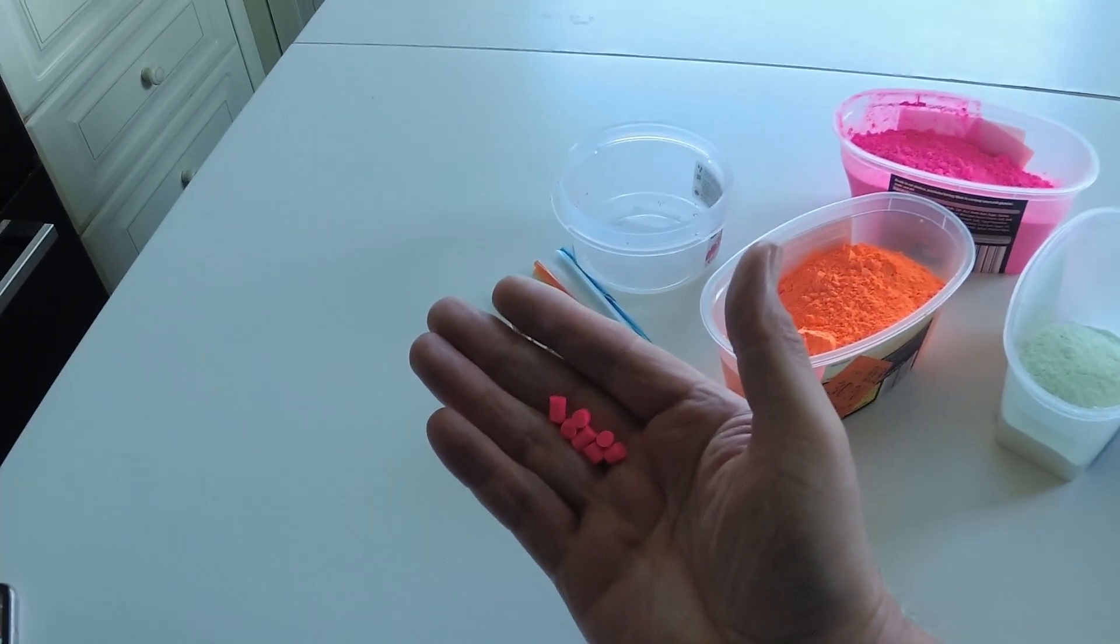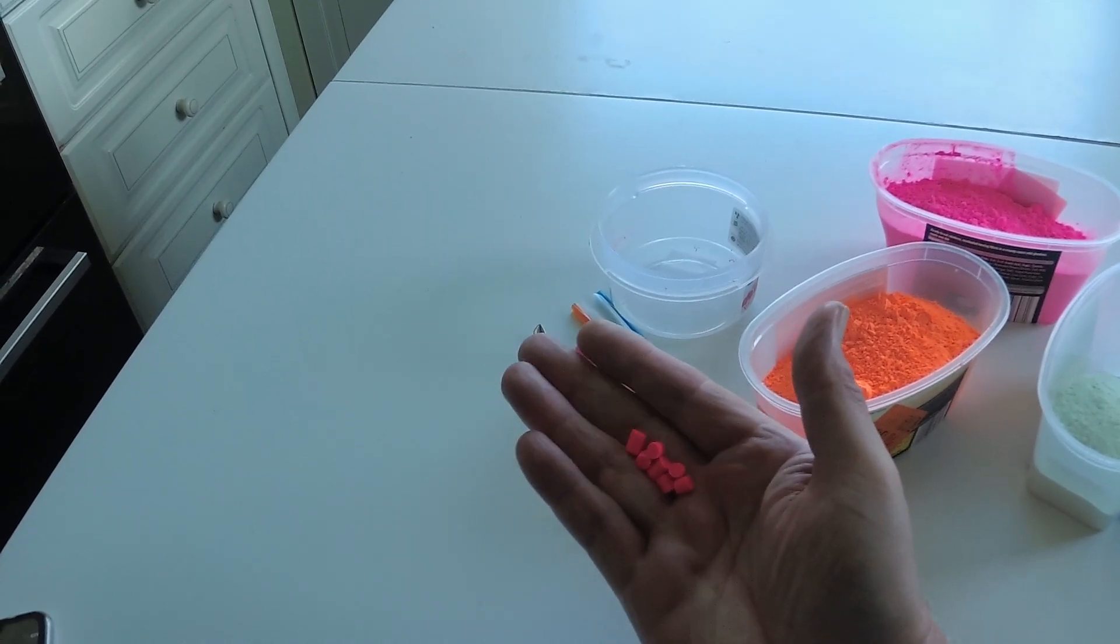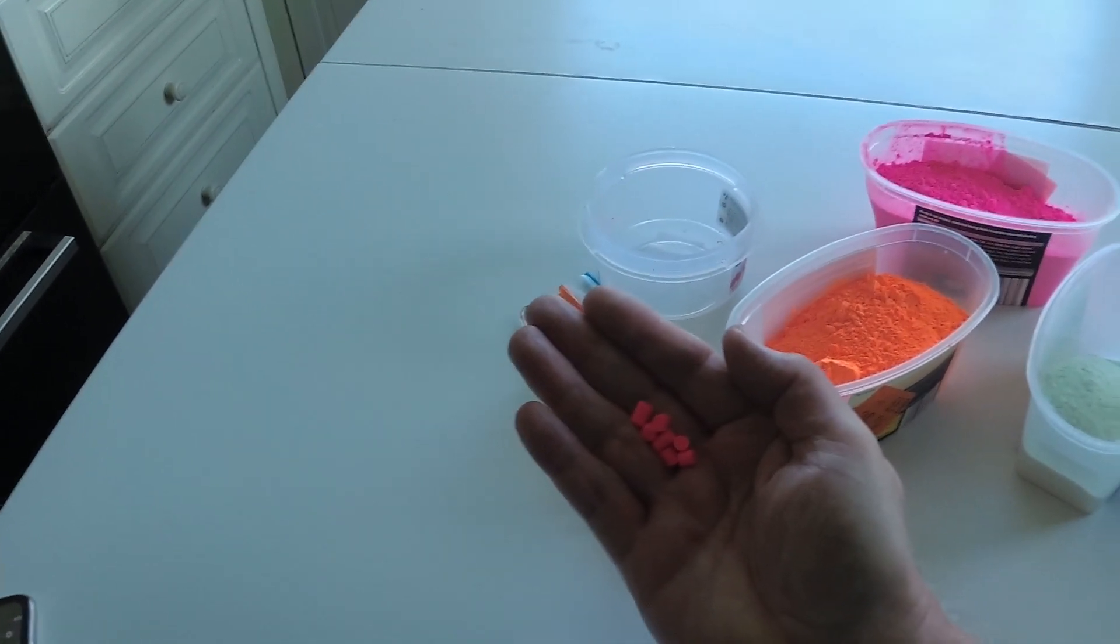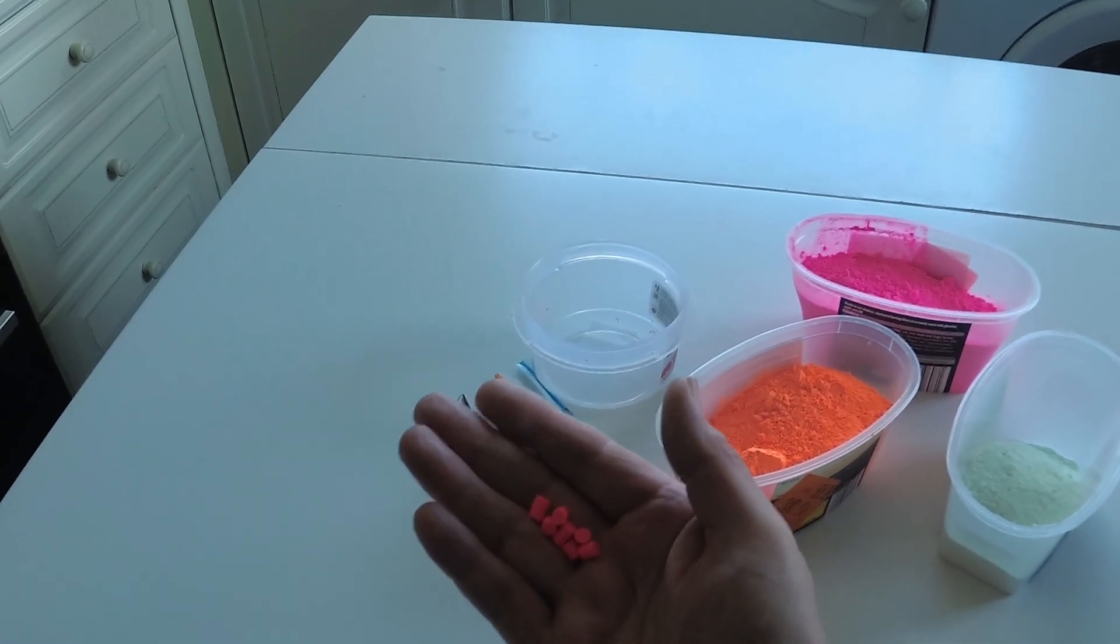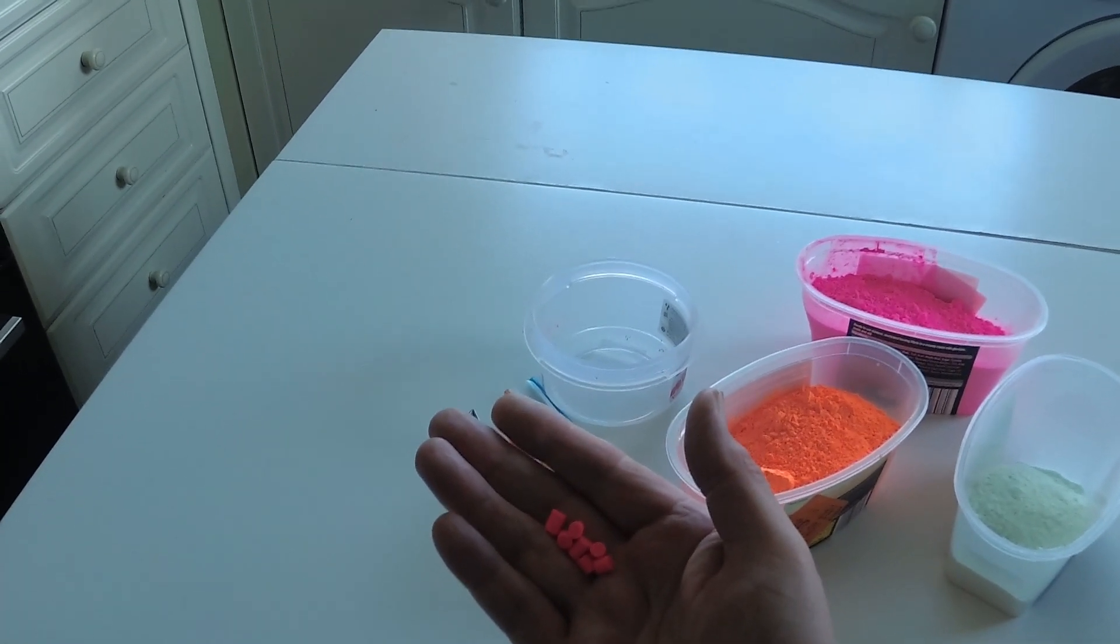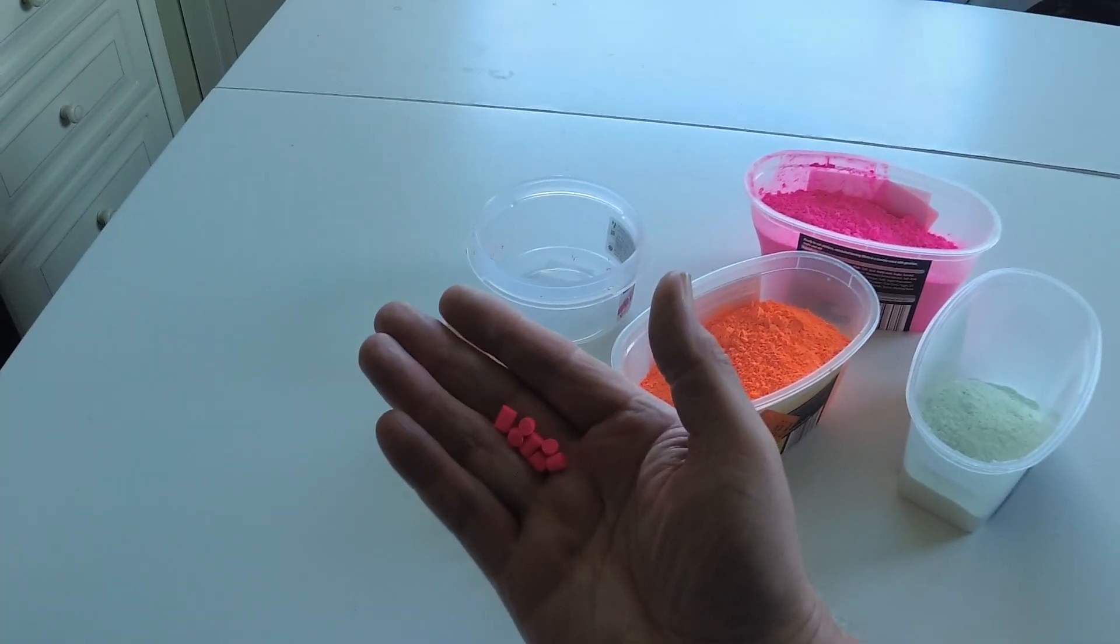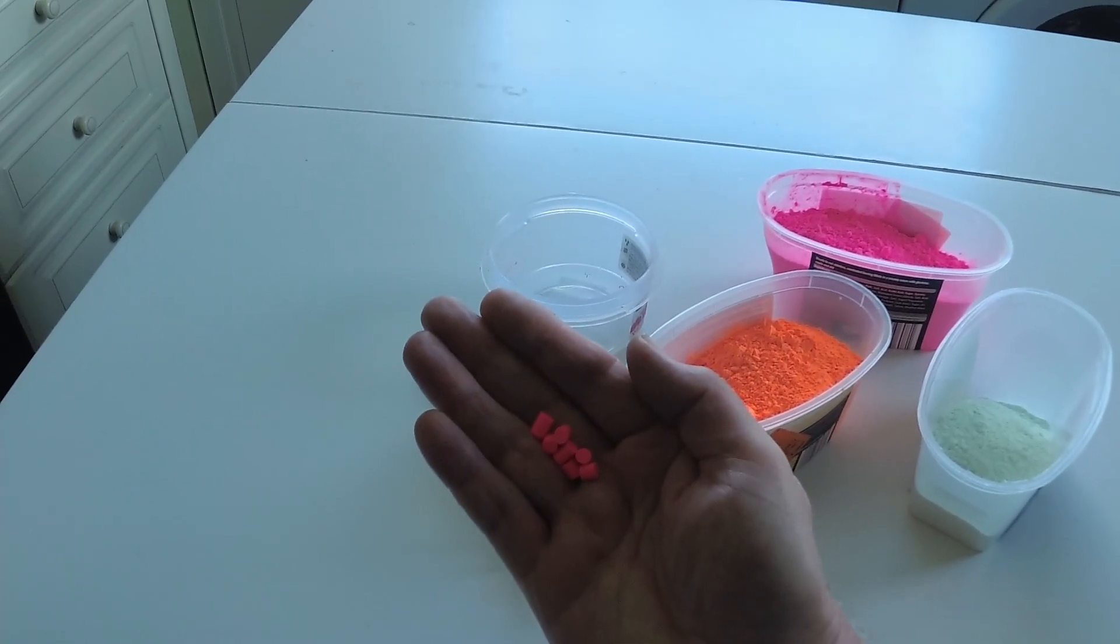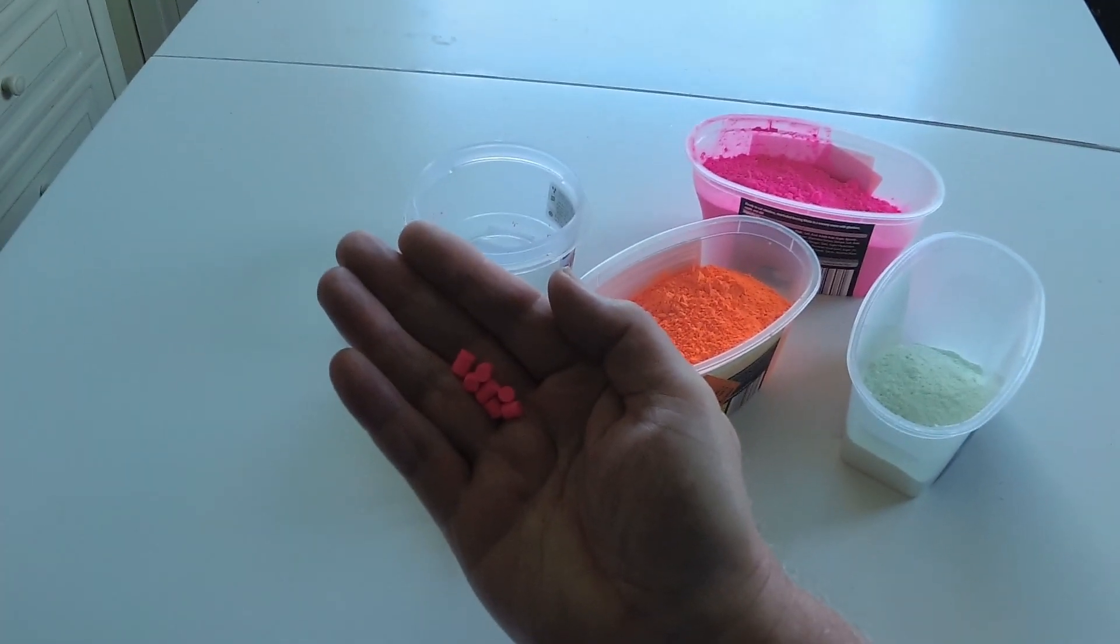Making silicone bait stops are fairly easy and they make really good attractors as well. It means that they can be put onto a hook and snood after it's been tied up, so you don't have to worry about threading beads on. There was a video already on YouTube but it seems to have disappeared, so I thought I'd do a quick one just to show how they're made.